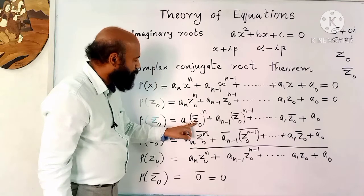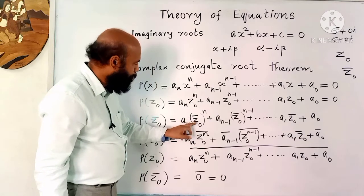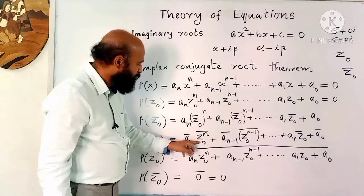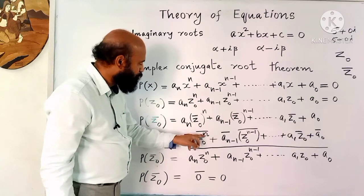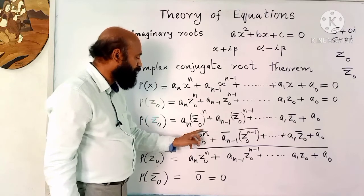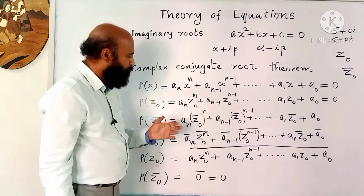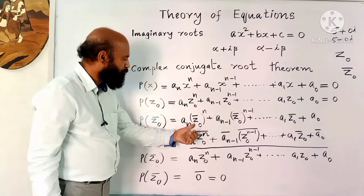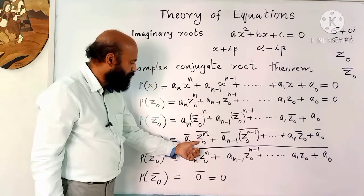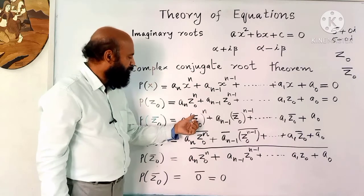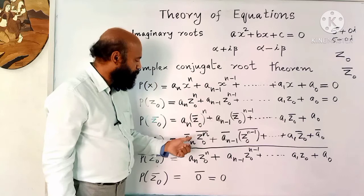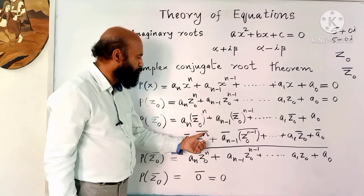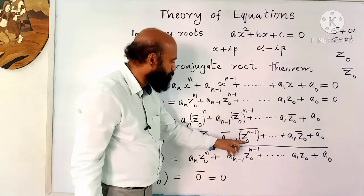Now we apply a key property: z0-bar raised to the power n can be written as the conjugate of z0^n. In other words, taking the conjugate then raising to the power gives the same result as first raising to the power n and then taking the conjugate.